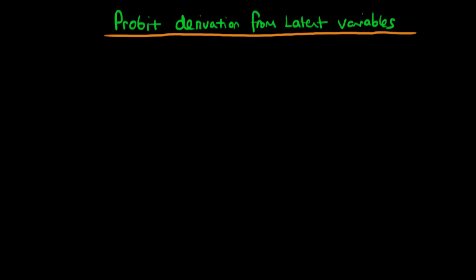In this video, I want to explain how the probit model can actually be seen as the result of a natural process whereby we're talking about a latent dependent variable. So what do I actually mean by this?